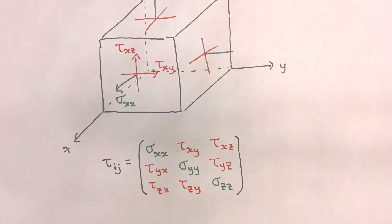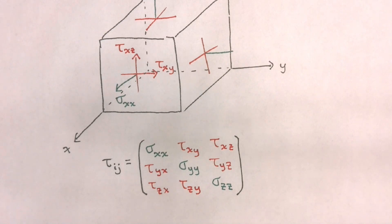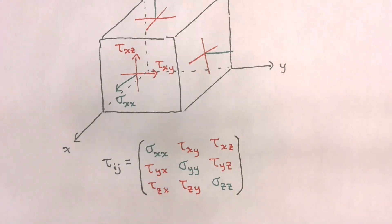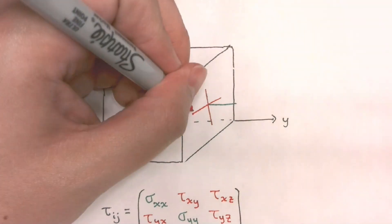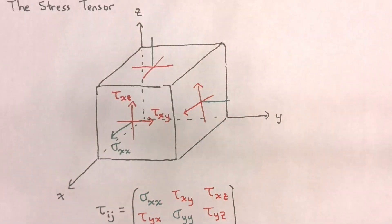The reason we want to identify all of these stress components is because when we derive our equation of conservation of momentum, we will have to consider all of the forces acting on our fluid element. These forces will result from shear stresses — that is, viscous forces — and from normal stresses — that is, pressure forces. Typically for the stress tensor, we will follow a specific sign convention.